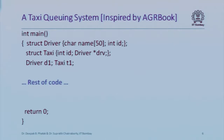Now let's build on this with the taxi queuing example, inspired by examples in Professor Ranade's book. I've defined two structures: one for the driver — with a character array for name and an integer ID — and one for a taxi — with an integer ID and a pointer to a driver, so that if the driver changes I can just change the pointer. I've declared two local variables: one of type driver and one of type taxi, both allocated on the stack.